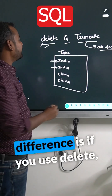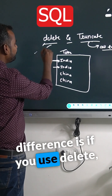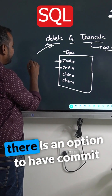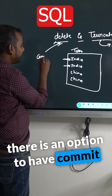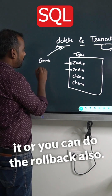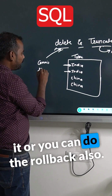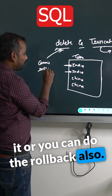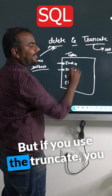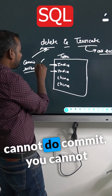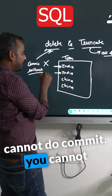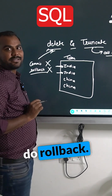Another difference is if you use delete, there is an option to commit or you can do a rollback also, but if you use truncate, you cannot do commit or rollback.